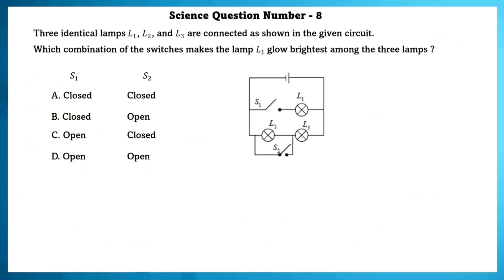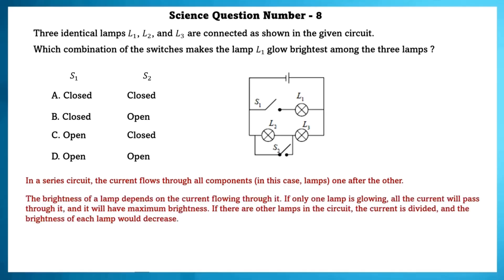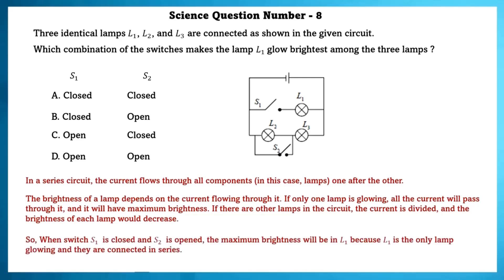Science question 8. Three identical lamps L1, L2 and L3 are connected as shown in the given circuit. Which combination of switches makes lamp L1 glow brightest among the three? In a series circuit, the current flows through all components one after the other. The brightness of a lamp depends on the current flowing through it. If only one lamp is glowing, all the current will pass through it and it will have maximum brightness. So when switch S1 is closed and S2 is opened, L1 is the only lamp glowing and will have maximum brightness.